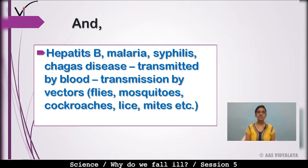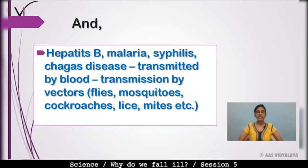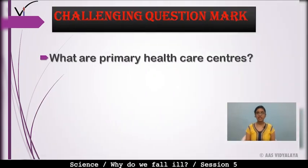Hepatitis B, malaria, typhus, and Chagas disease are transmitted by blood. Their transmission occurs through vectors such as flies, mosquitoes, cockroaches, lice, and mites — these spread the diseases.